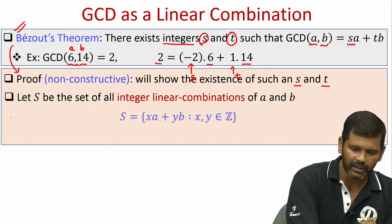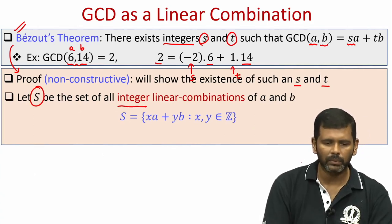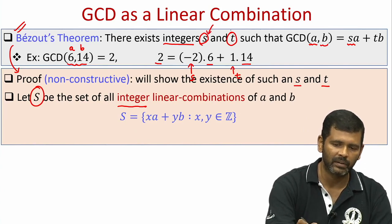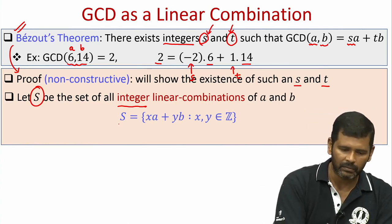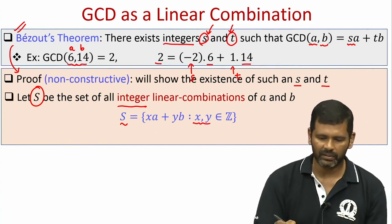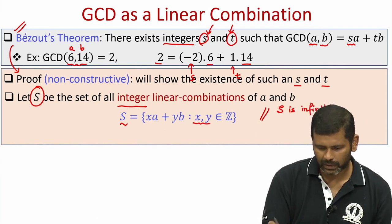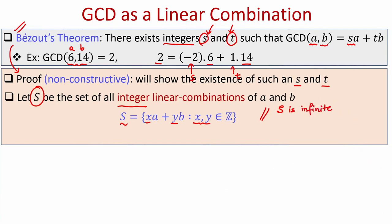The proof is non-constructive and the goal is to show the existence of S and T. To begin with, let me define a set S which is the set of all integer linear combinations of inputs A and B. Remember, throughout the proof we focus only on integer linear combinations. So S is the set of elements of the form X times A plus Y times B, where X and Y can be arbitrary integers. It is easy to see that S is infinite because there are infinitely many integers.